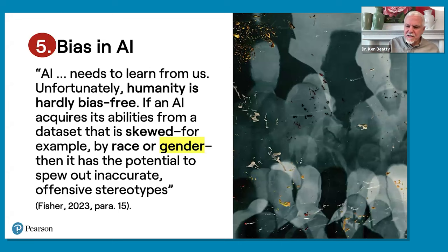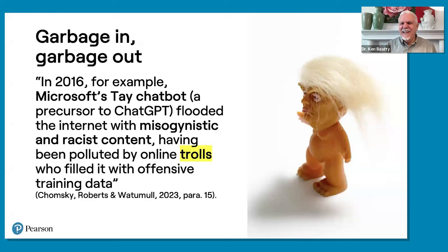The rule is: garbage in, garbage out. If you feed it garbage, it will produce garbage. This happened in 2016 with one of the early forms of artificial intelligence — a Microsoft chatbot called Tay. It asked the public to teach it by asking and answering questions. But people played a sick game and taught it racist things and misogynistic content, and they had to shut it down after just about two days because it was getting so bad.